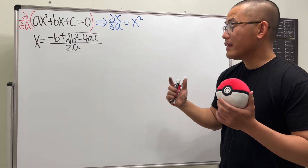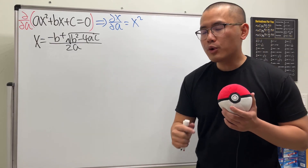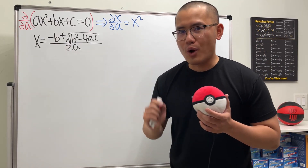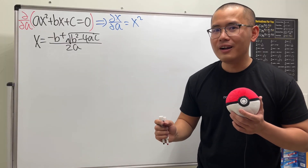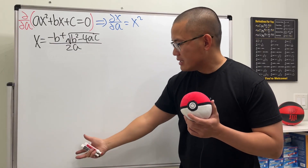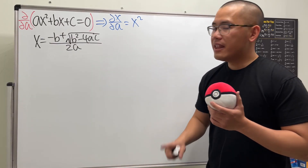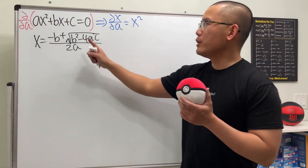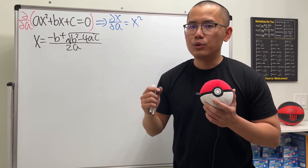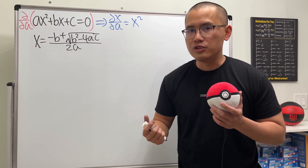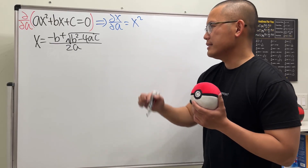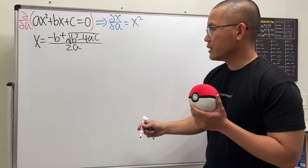So let's go ahead and do the following: we're going to differentiate the quadratic formula with respect to a to get an answer, and then we'll go back to the quadratic equation and differentiate it using implicit differentiation the correct way.